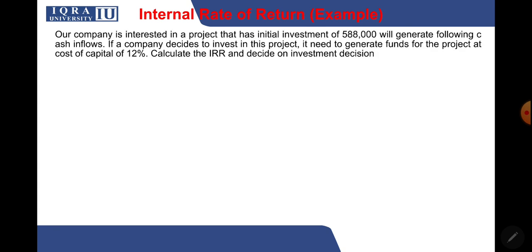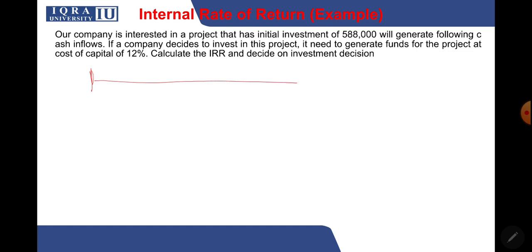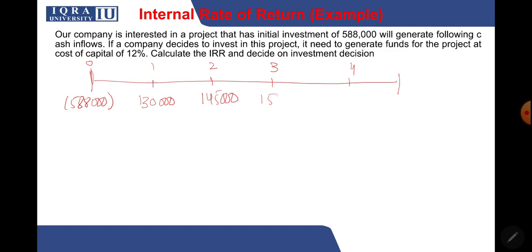Here is an example: a company is interested in a project with an initial investment of 588,000. It will generate the following cash inflows — drawing the timeline: Year 0: initial investment of 588,000; Year 1: 130,000; Year 2: 145,000; Year 3: 150,000; Year 4: 100,000; Year 5: 419,000.